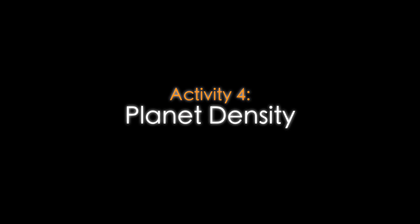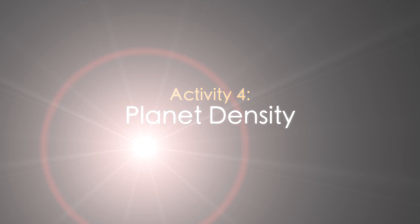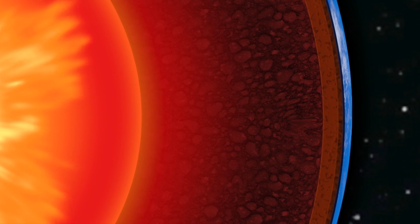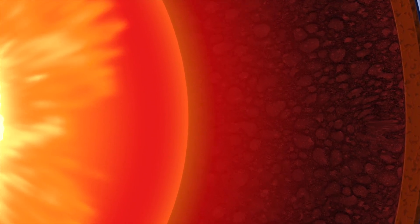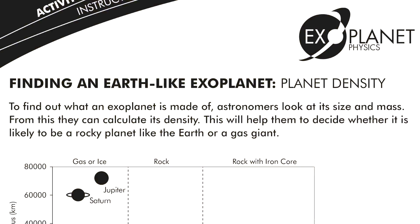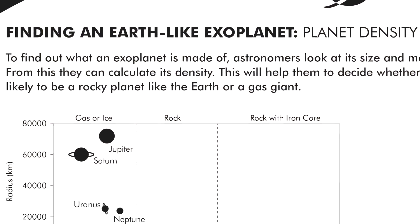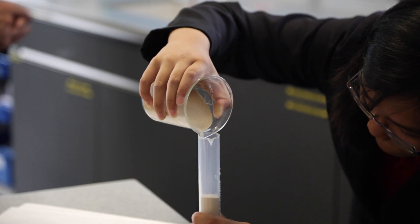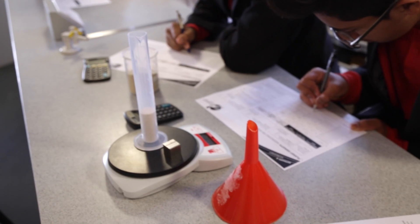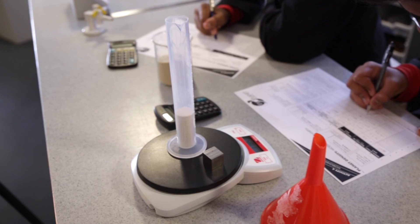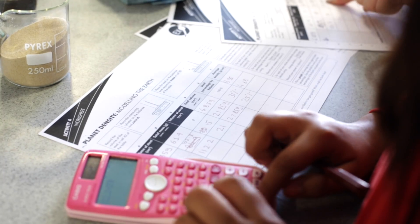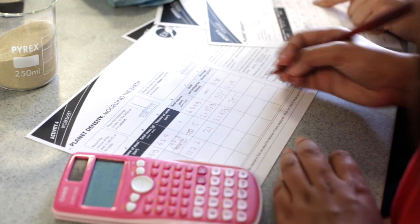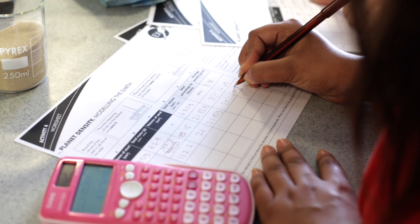Activity 4 is about density. They model the Earth using sand to represent the outer rocky layers and steel to represent the iron core. By investigating the density of a mixture of sand and steel and comparing it to that of the Earth, they are able to estimate the percentage of the Earth's volume occupied by its core.